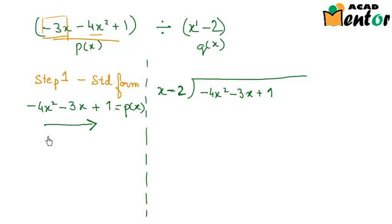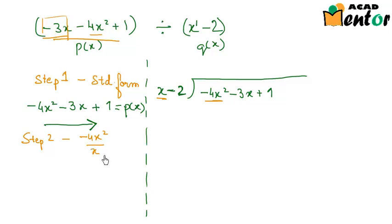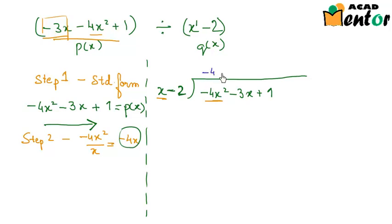Step 2 is to divide the first term of the dividend by the first term of the divisor. That means dividing minus 4x squared by x, which gives negative 4x. This is the first term of the quotient, and we write it on top of the long division sign.